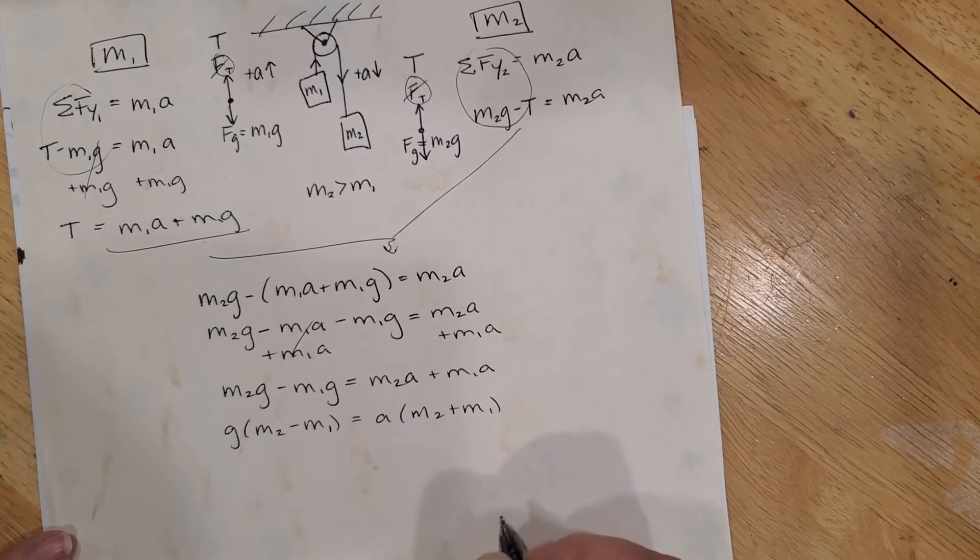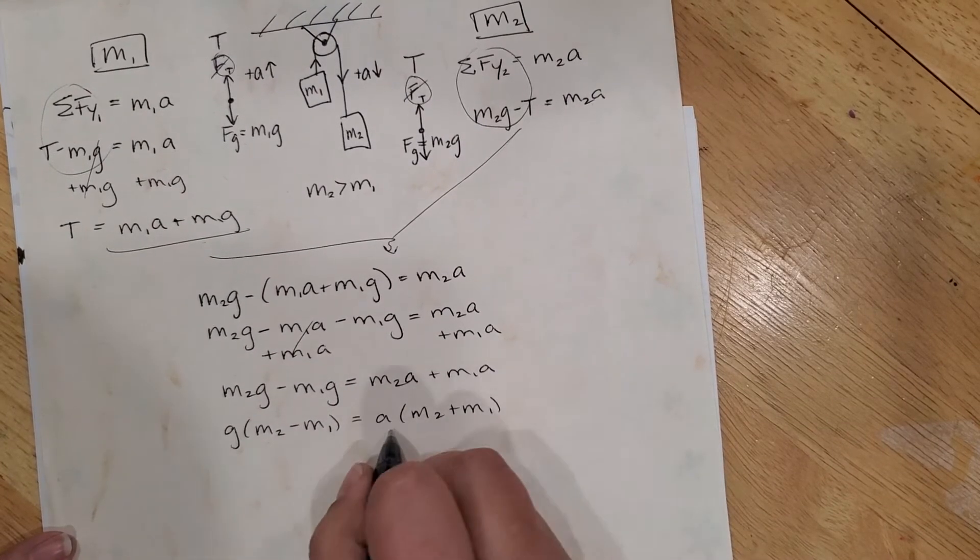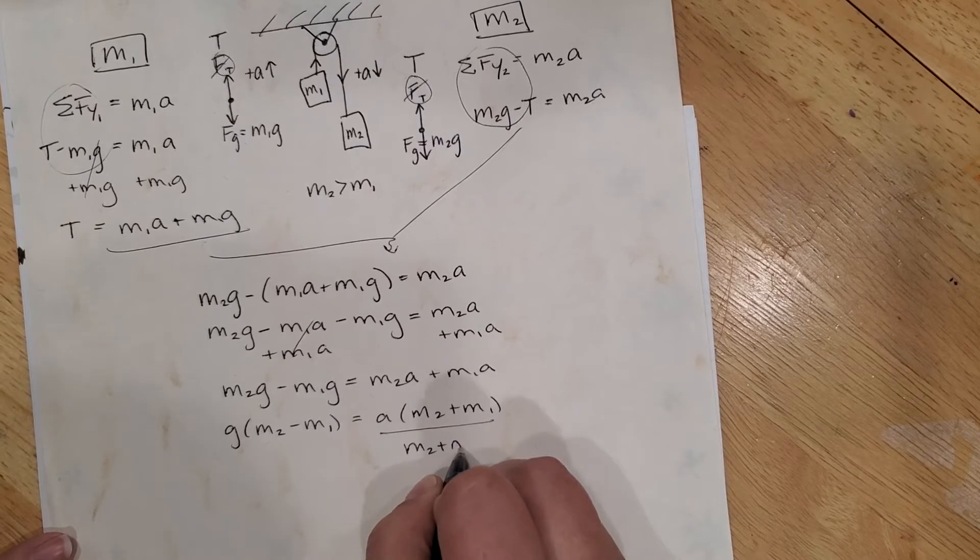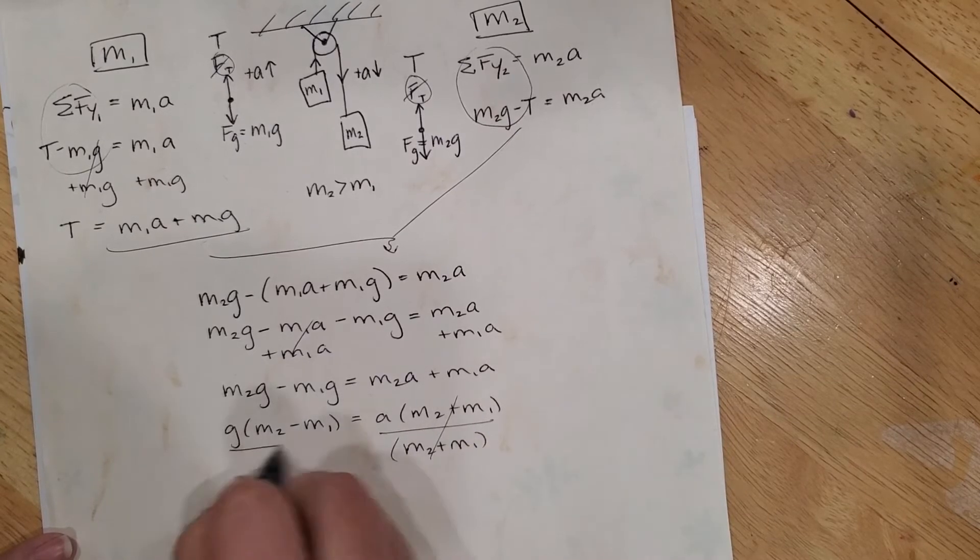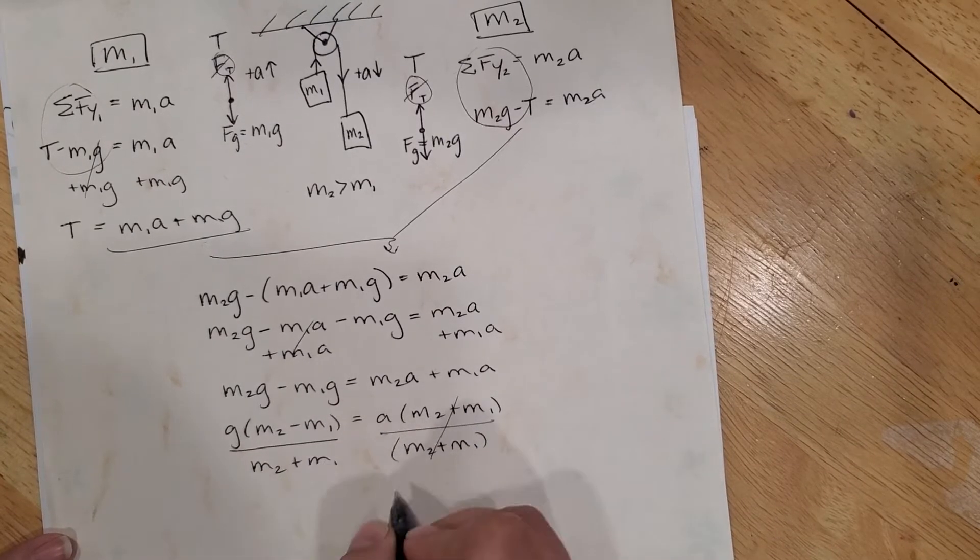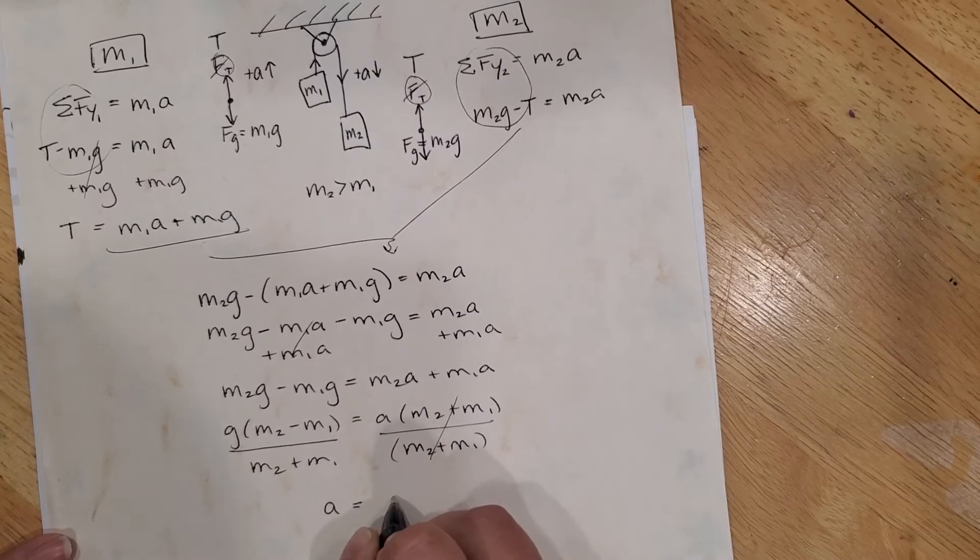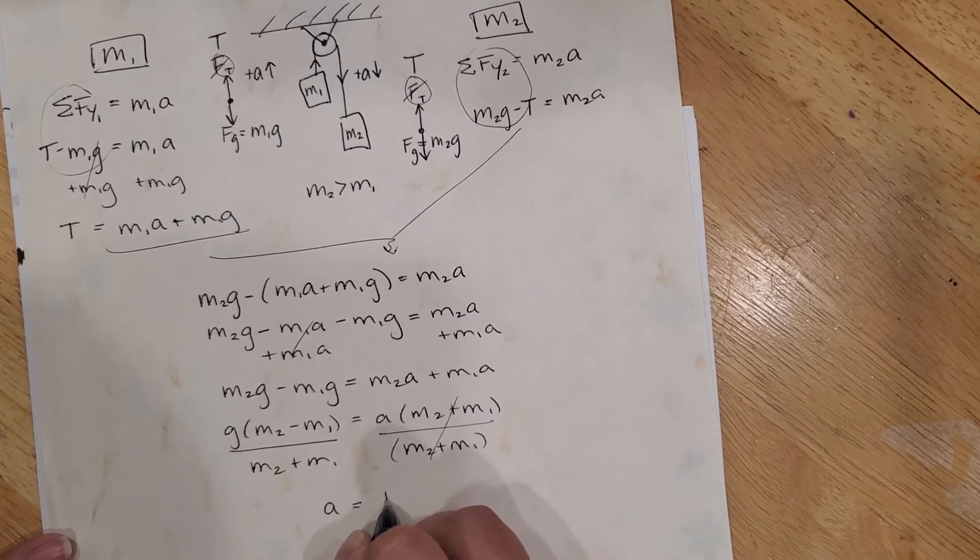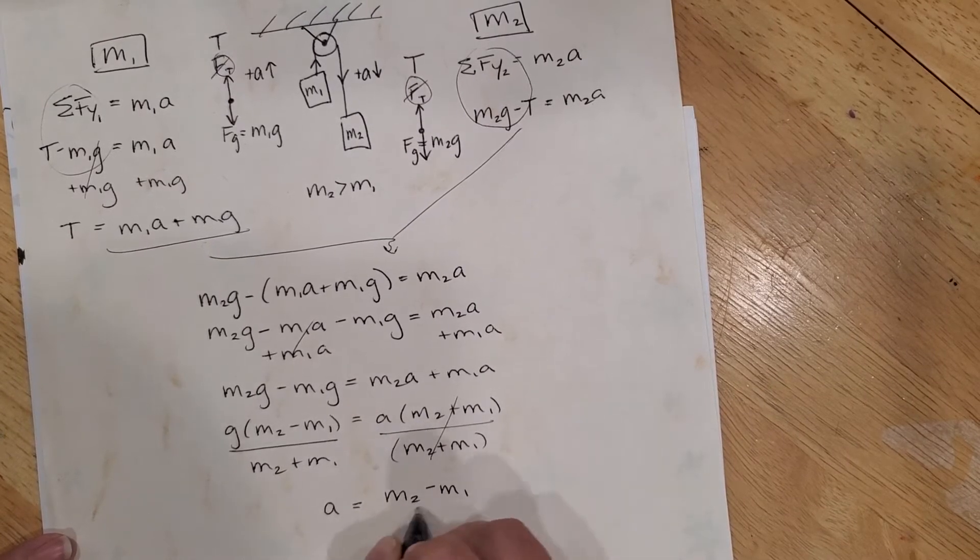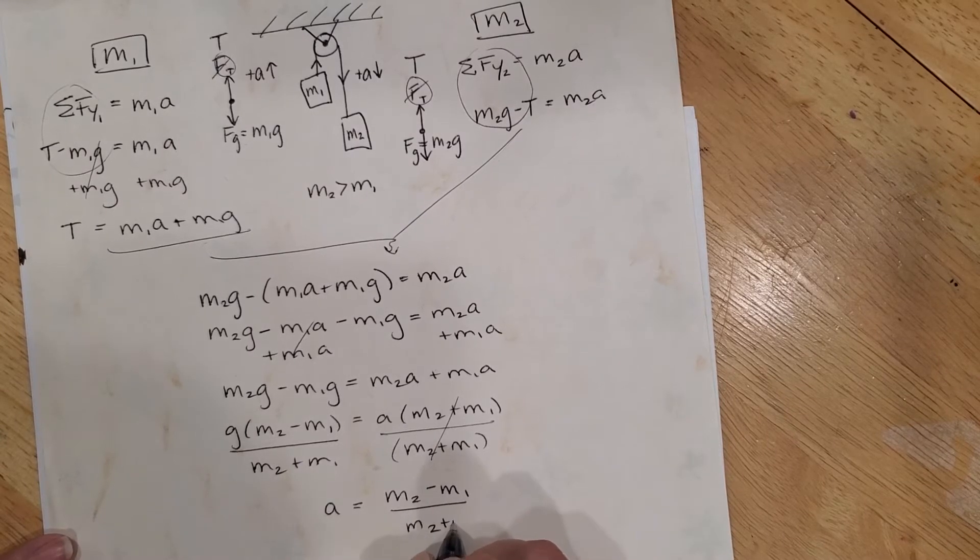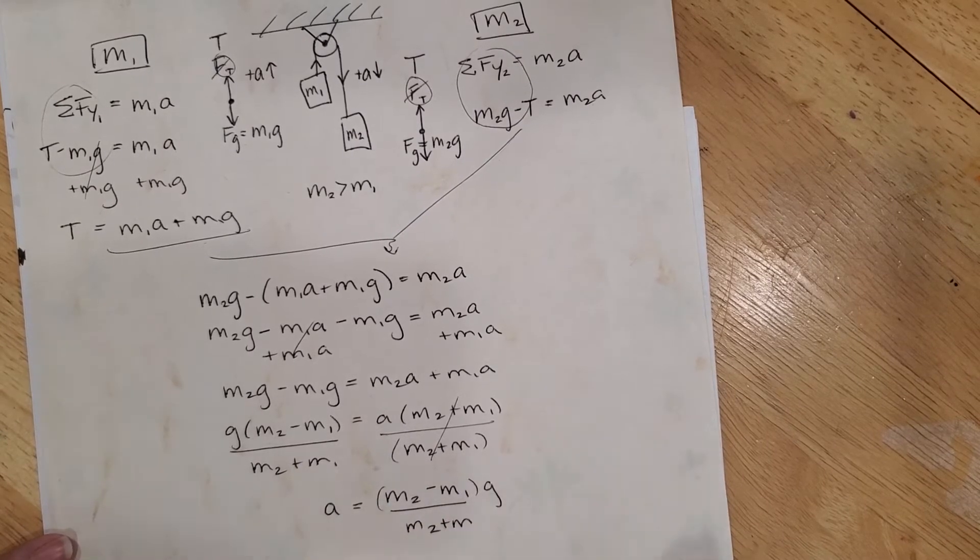And now I'll divide both sides by m2 plus m1 and boom, a equals m2 minus m1 over m2 plus m1. I'm gonna stick the g over there at the end because I like the pattern of the way the m's look.